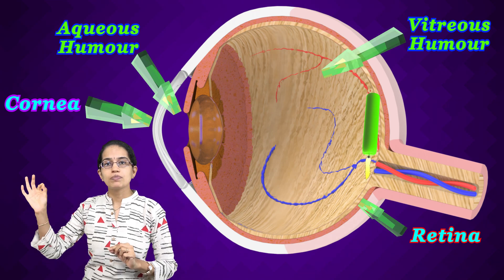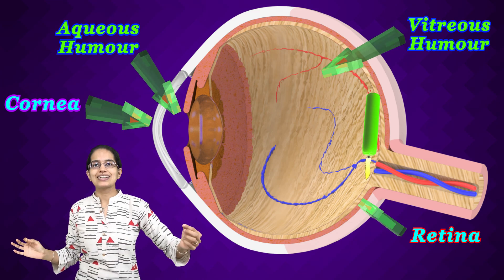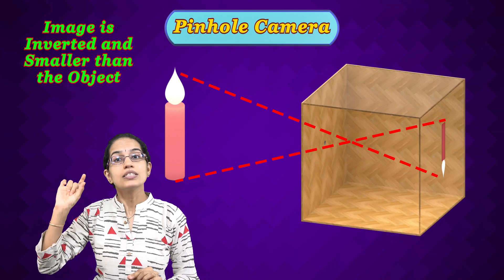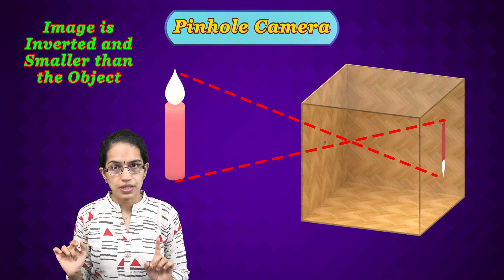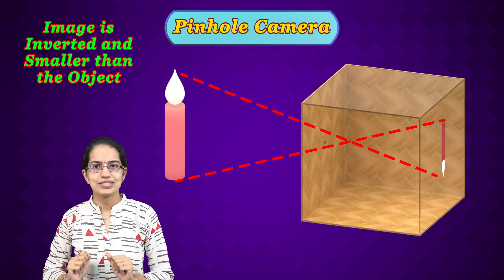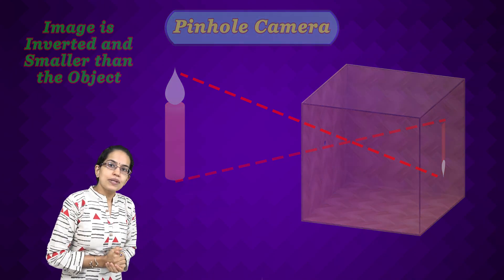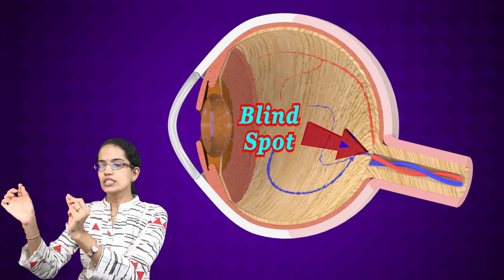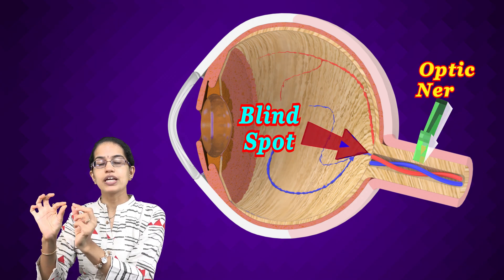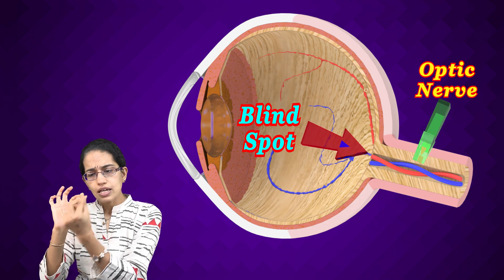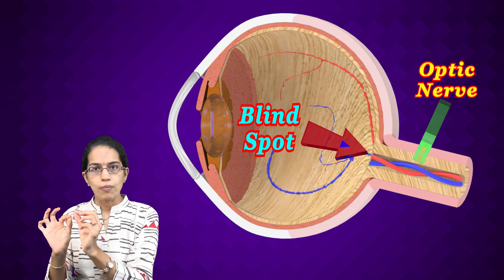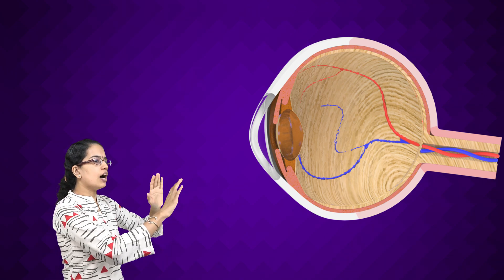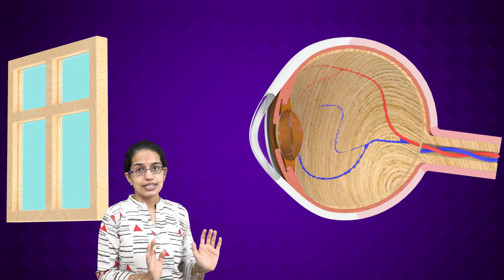When image formation takes place on the retina, it follows the concept of a pinhole camera — you get an inverted image that is smaller in size. This is a very important concept. Now, the blind spot is the spot just before the optic nerve where no image is formed.